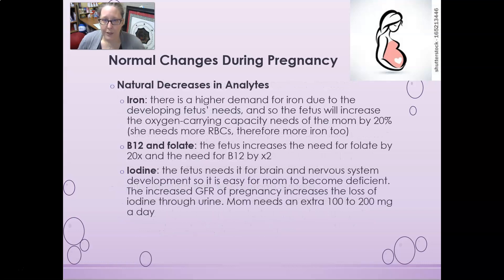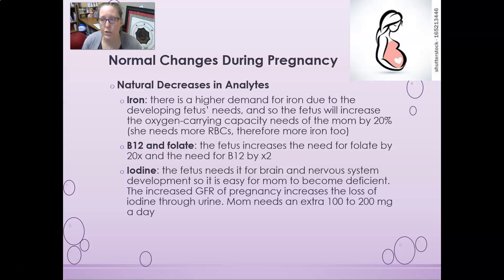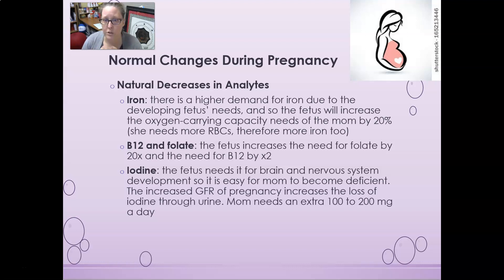There will be a natural decrease in iron in the mom because there is a higher demand due to the developing fetus. The fetus will increase the oxygen-carrying capacity needs of the mom by about 20%, so she will need more red cells and therefore more iron. Not only does mom need more iron for more red cells, but the baby also needs iron — and iron is not just used in making hemoglobin; it is also used in the mitochondria, electron transport chains, and other enzymes.